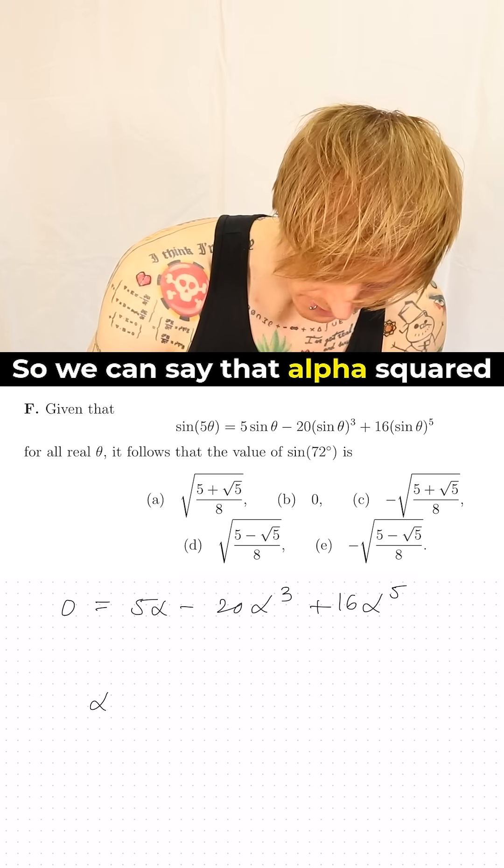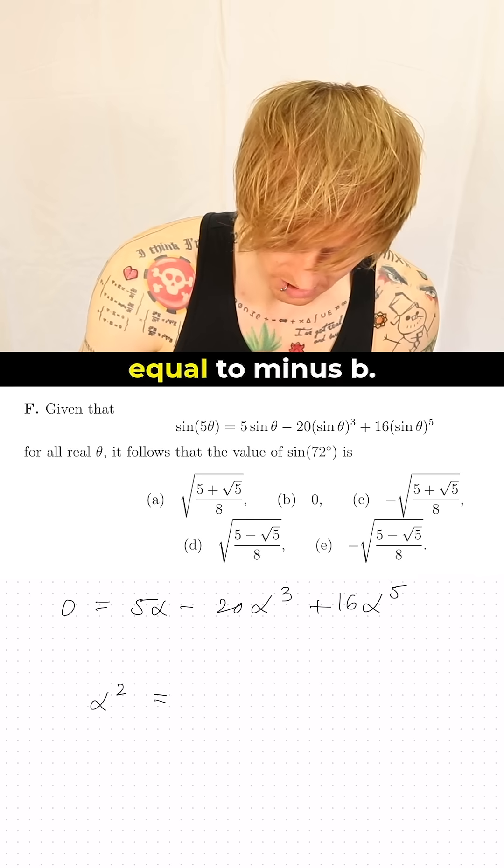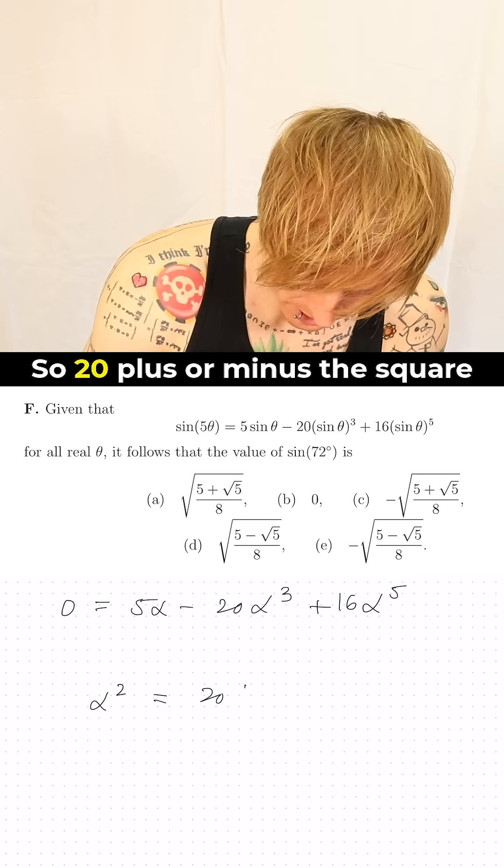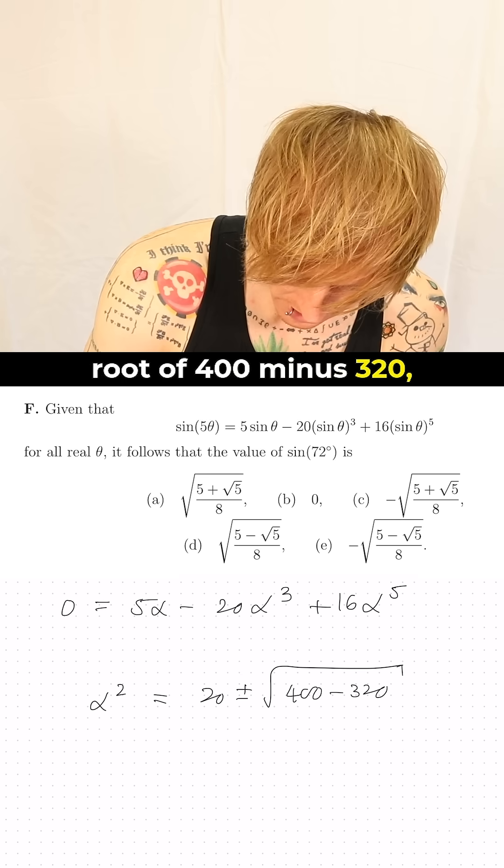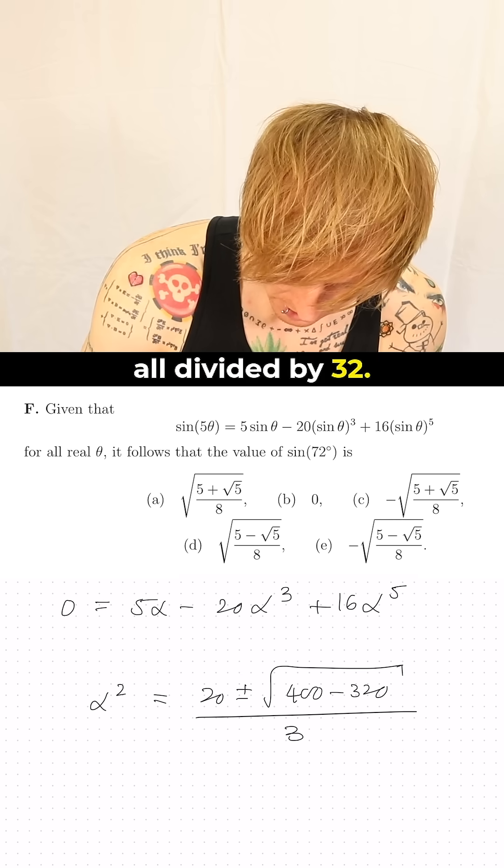So we can say that alpha squared is actually going to be equal to minus b, so 20 plus or minus the square root of 400 minus 320 all divided by 32.